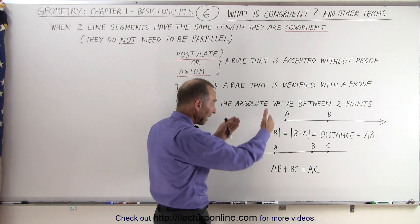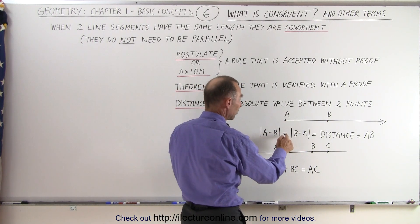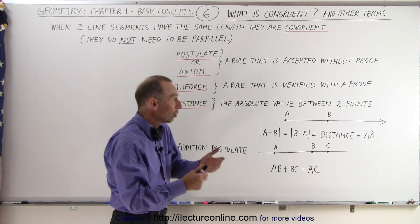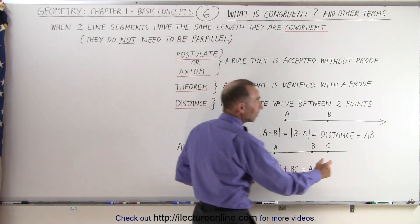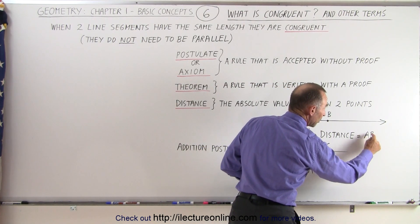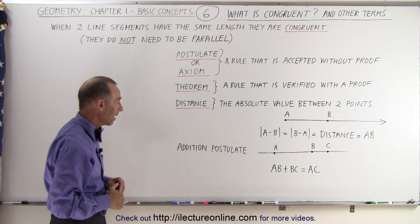And since we're taking the absolute value we can switch them around. We go A minus B, take the absolute value, must equal the absolute value of B minus A. That's called a distance and yes, we can describe it like this, simply by writing A B without the line on top, that then signifies the distance between those two points on that line.